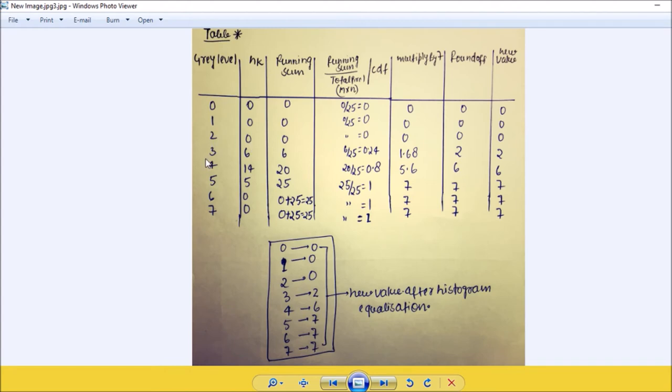Number of occurrence of 2 is 0, number of occurrence of 3 is 6. See here 3 is 6 only, so 6, 14, and then 5. Now running sum - how to find the running sum? Simply add this. So 0, 0, and then 6, and then 14 plus 6 is 20, and then 20 plus 5 is 25, 25 plus 0 is 25.